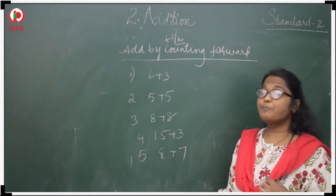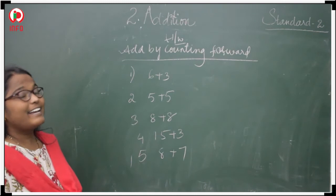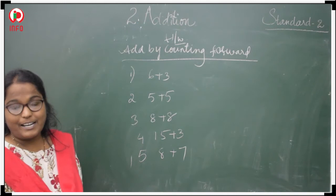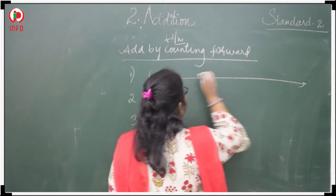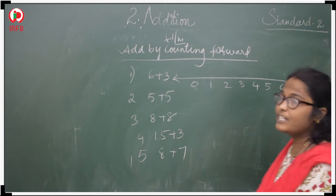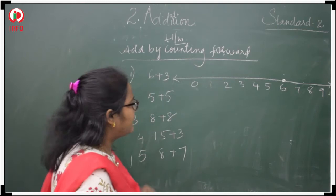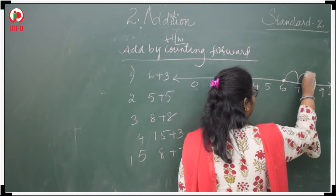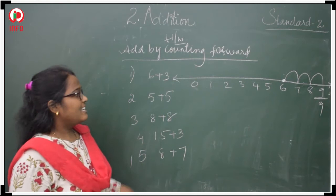I am giving you some homework problems by counting forward. I will explain one problem for you. 6 plus 3. What is our answer? Where do we start? From 6. How many numbers going forward? 1, 2, 3. Our answer is 9. You can also add 6, 7, 8, 9.